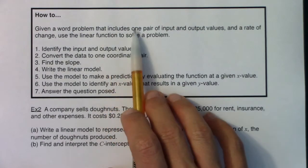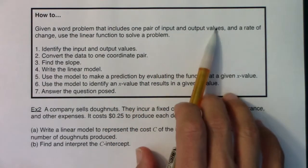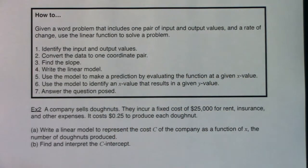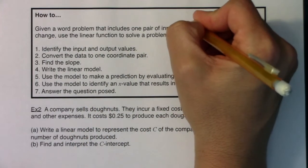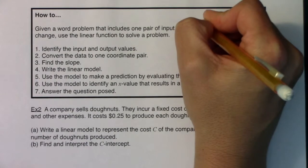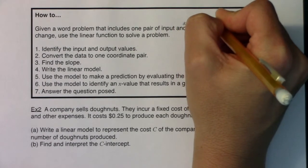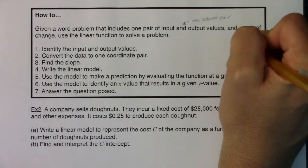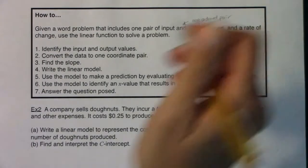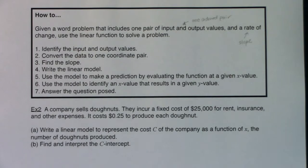So we're going to be given a word problem that includes one pair of input and output values and a rate of change, and we're going to use a linear function to solve the problem. So when you see one pair of input and output values, you're given one ordered pair, and when you hear rate of change, that's fancy speak for slope. Average rate of change if we're talking about linear functions.